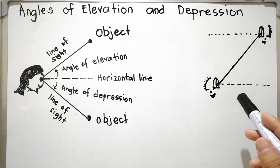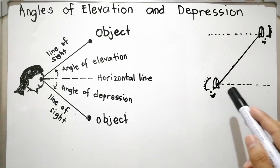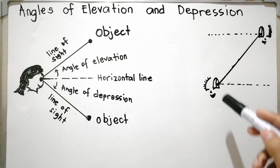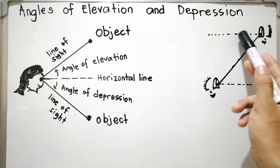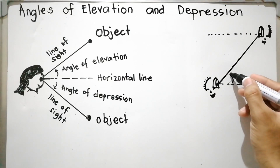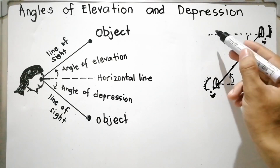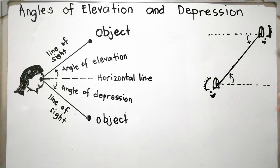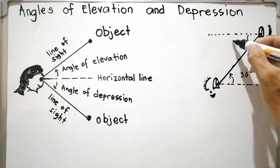Please take note that the angle of elevation is equal to the angle of depression — they are congruent. Considering this illustration with two observers, the horizontal lines of sight and the line of sight connecting them form an angle of elevation above and an angle of depression below. If the angle of elevation is 30 degrees, the angle of depression is also 30 degrees.